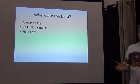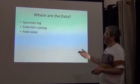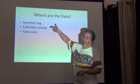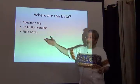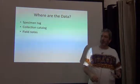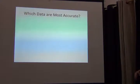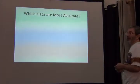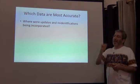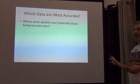So where are the data in the University of Kansas ornithology collections? Well, they're somewhere between the specimen tag, the collection catalog — which are those paper ledgers — and the field notes. And so I need to think about where to get the best quality information. Which data are the most accurate? Where were people annotating re-identifications, updates to data?